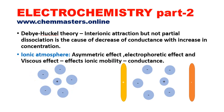The asymmetric effect, electrophoretic effect, and viscous effect are three very important effects which affect the ionic properties of the electrolyte and its conductance. These three effects are the reasons for the decrease in conductance with increase in concentration.